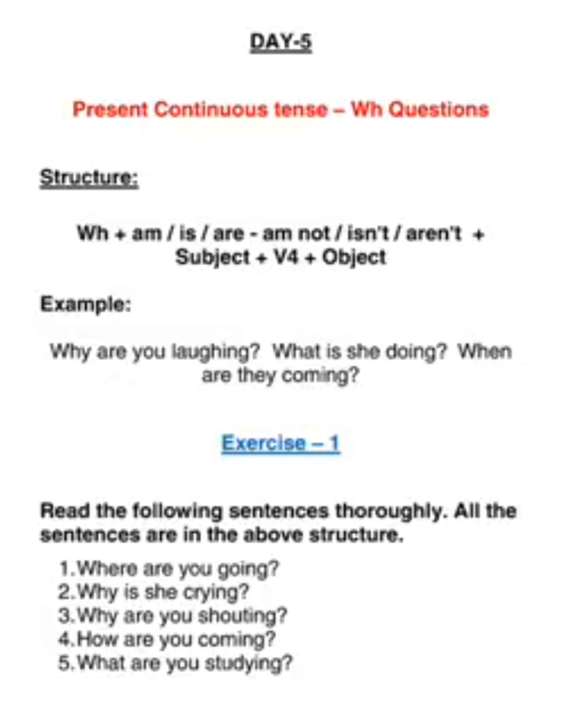Day 5. Present Continuous Tense WH Questions. We have many WH questions like where, when, why, what, whom, who, which, whose, etc. And what is the structure for that? In present continuous tense, how do we make WH questions?